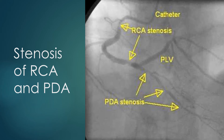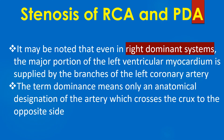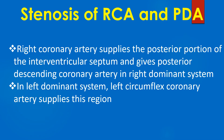This is a right dominant system, meaning that the right coronary system crosses the crux — the junction of the atrioventricular and interventricular grooves posteriorly — and supplies the posterolateral region of the left ventricle. It may be noted that even in right dominant systems, the major portion of the left ventricular myocardium is supplied by branches of the left coronary artery. The term dominance means only an anatomical designation of the artery which crosses the crux. In a right dominant system, the right coronary artery supplies the posterior portion of the interventricular septum and gives rise to the posterior descending coronary artery.